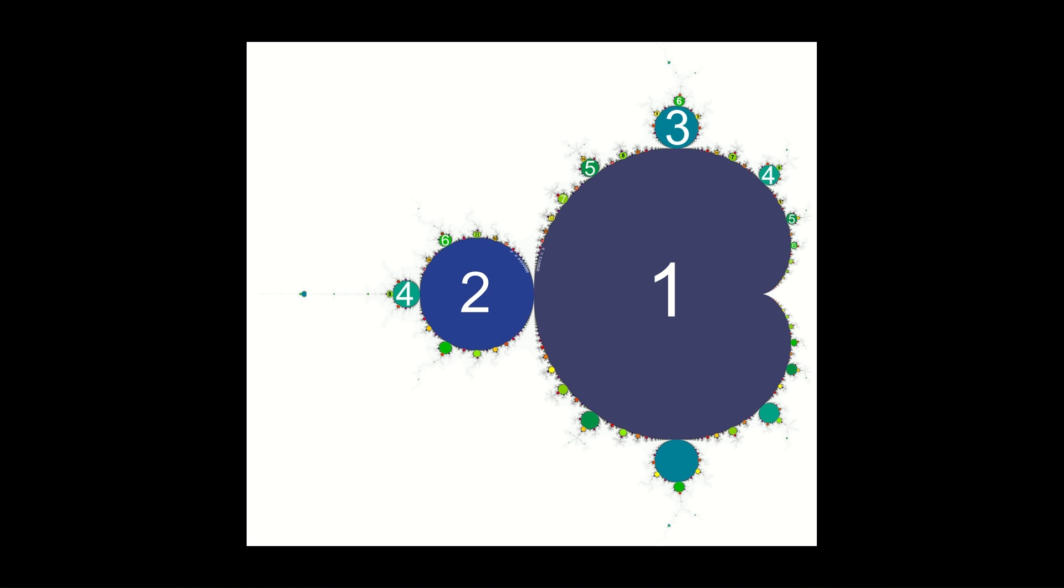This picture shows the length of these cycles, depending on which region you start in. So the main region has cycle length one, meaning it tends to just one limit point. Then, as we saw, the top circle has a three in it, because we get three limit points, and four and five from the other circles we saw. And in general, the smaller the region, the larger the number of limit points.